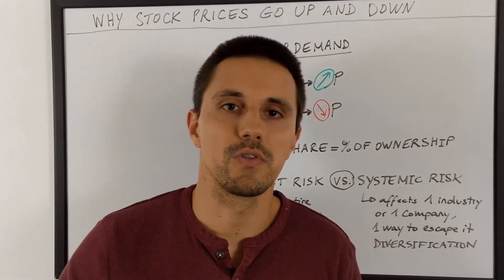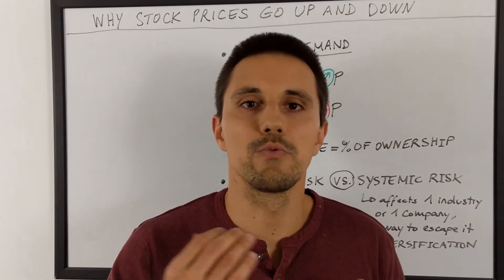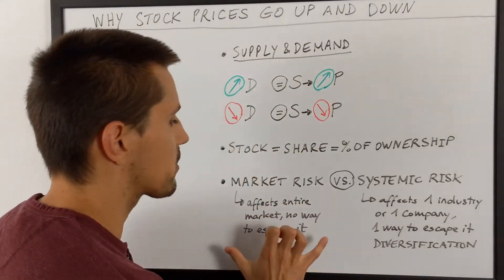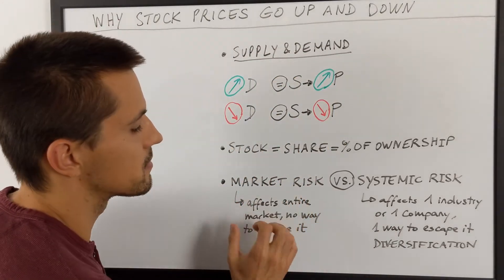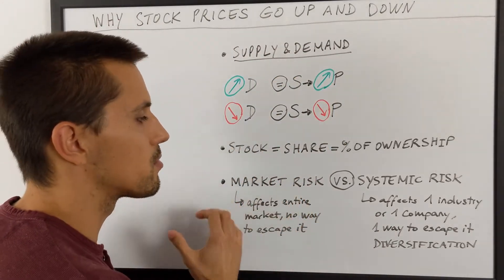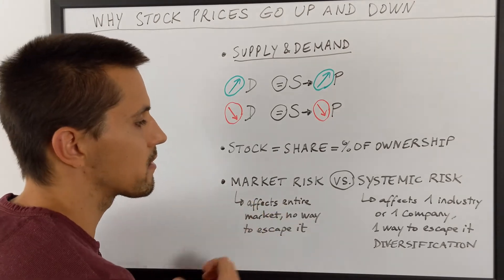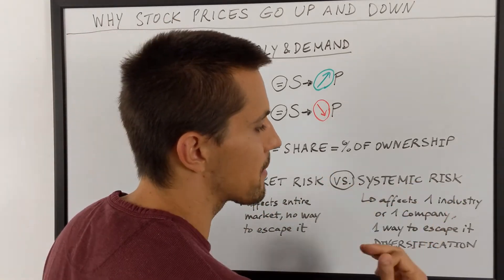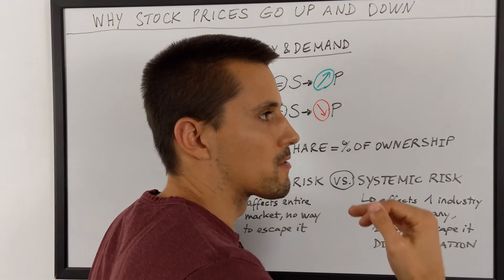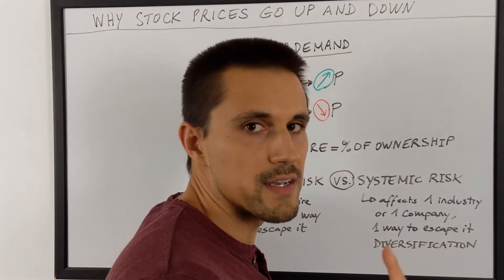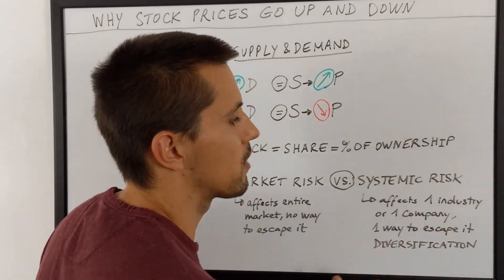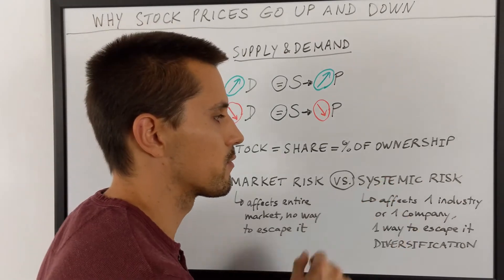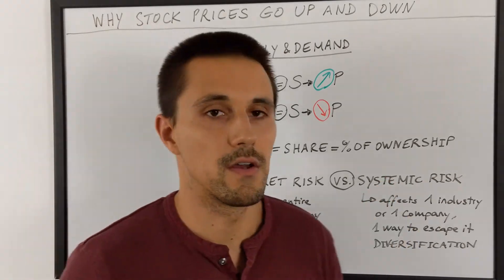When I talk about the main reasons why stocks go up and down, I'm not talking about market risk, because market risk is the global risk for the entire world economy. I'm gonna talk about systemic risk — specifically the price fluctuation of one stock of one company. That's what we're gonna talk about right now.